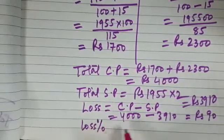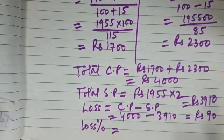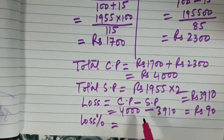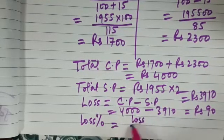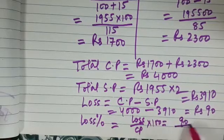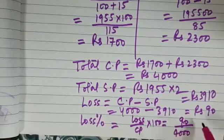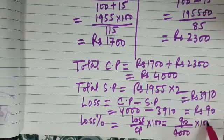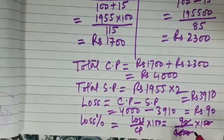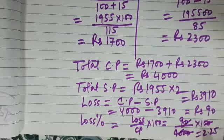Now we need to find out the loss percent. Loss percent is calculated on CP, so loss percent will be loss upon CP into 100. So that gives us 90 upon 4000 into 100. Simplify this. What do you get? Yes, the answer is 2.25. So what is loss percent? 2.25 in the entire transaction.